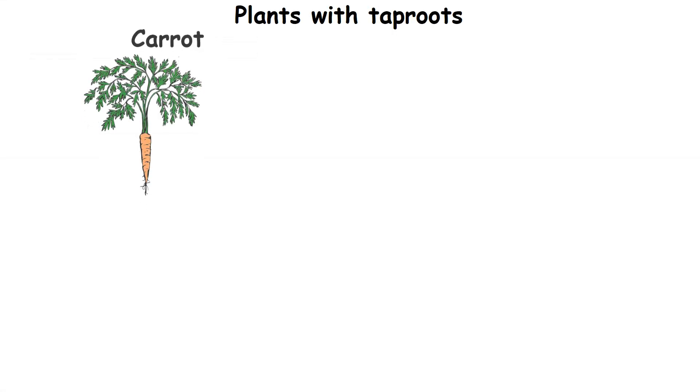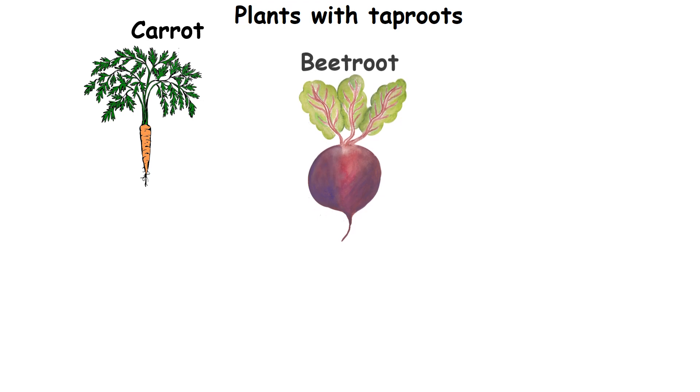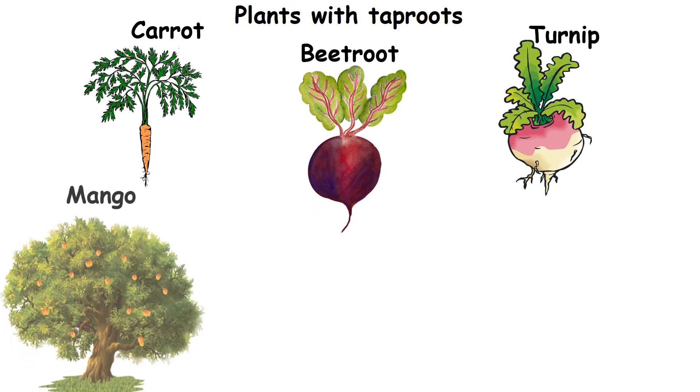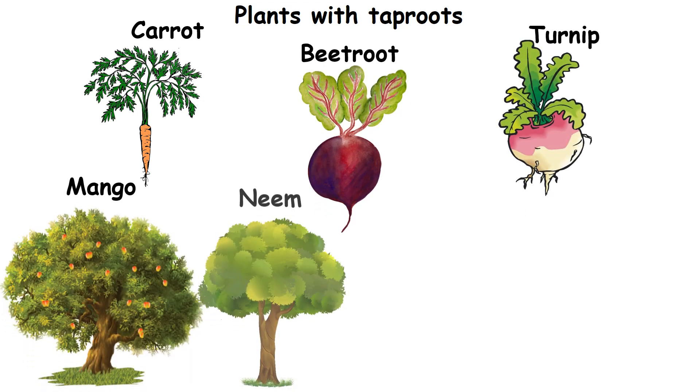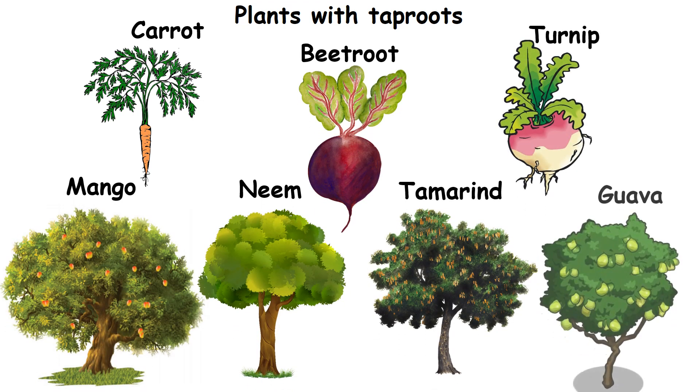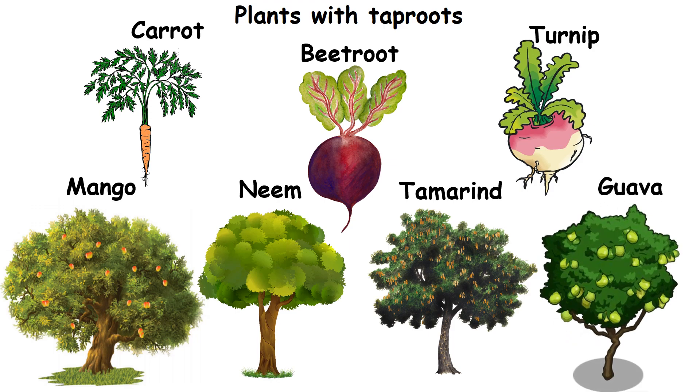Plants such as carrot, beetroot, turnip, mango, neem, tamarind and goa have taproots.